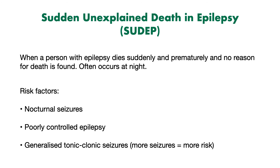Another complication of epilepsy is sudden death, termed SUDEP — sudden unexplained death in epilepsy. This occurs when a person with epilepsy dies suddenly and prematurely, and no reason for the death is found. Many of these deaths occur at night. Risk factors include nocturnal seizures, poorly controlled epilepsy, and having generalised tonic-clonic seizures — with the level of risk depending on the number of seizures. According to SUDEP Action, an epilepsy death charity in the UK, there are around three epilepsy-related deaths every day in the United Kingdom. You can learn more about SUDEP at sudep.org.